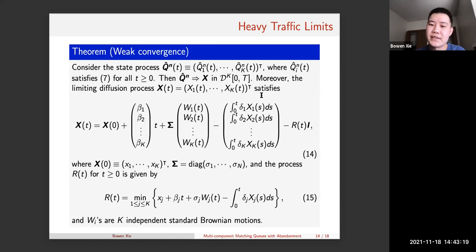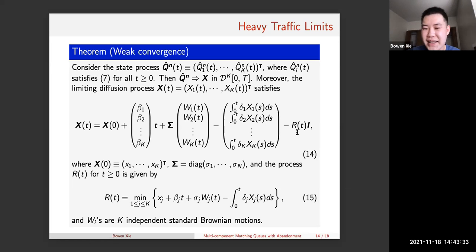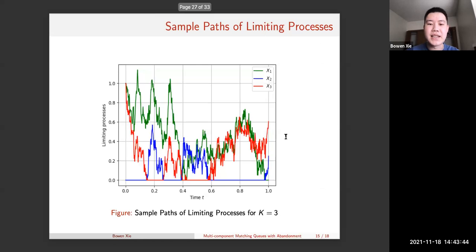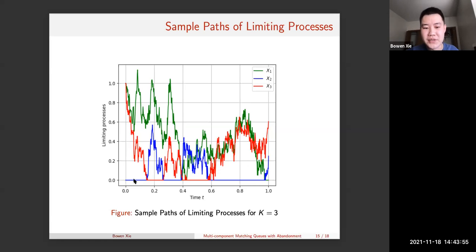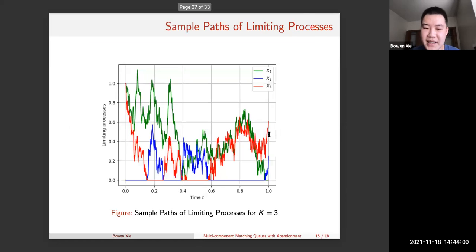For the main weak convergence result, we prove that the joint queue-length process converges weakly to X, which satisfies a stochastic integral equation that is slightly different from the standard one — a graph illustrates what exactly it is. The proof follows from the continuity of the integral representation. A simulation shows what happens: at one interval the blue queue is empty, and at another interval the red queue is empty, roughly simulating the whole process.